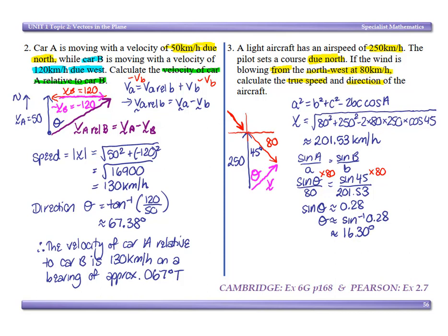Finish with a therefore statement. So therefore the aircraft is flying at approximately 201.53 kilometers an hour on a bearing of approximately 16.15 degrees true.